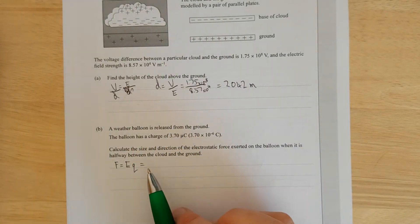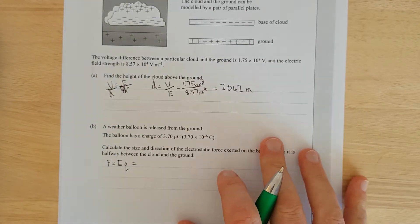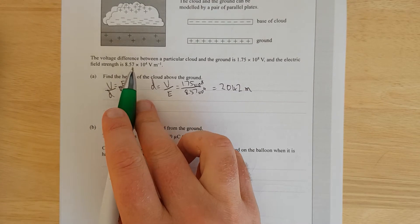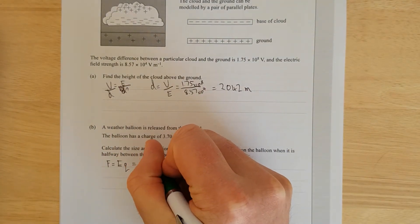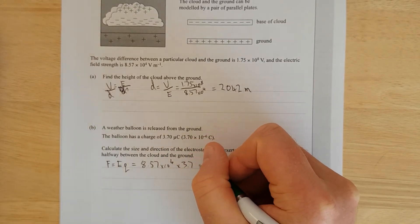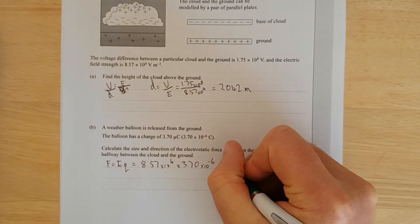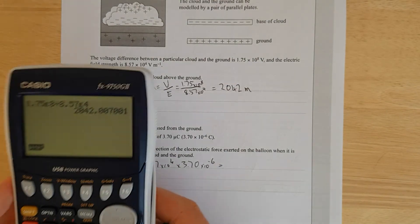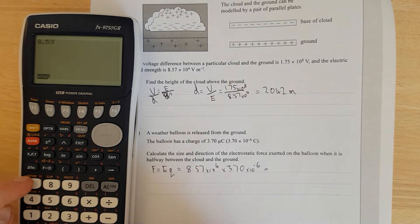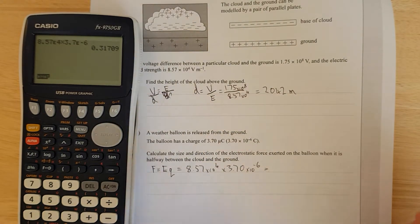We have the electric field, it's linear the whole way through. We're halfway through it, so the electric field is 8.57 times 10 to the 4, and it's going to be times 3.7 times 10 to the negative 6. I'll do it sort of to the side.